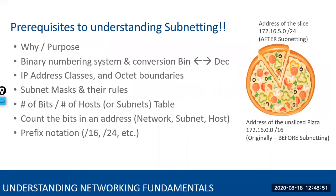How many types of switches are in networking? It depends on how you categorize them — there are many different ways. At a high level, think of them as access, distribution, and core. In a large enterprise network, you'd have all three: access is where users connect their devices; distribution aggregates a bunch of access switches; and core is the backbone. That's one way to categorize them.